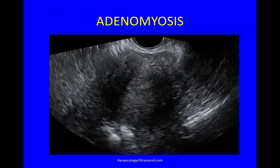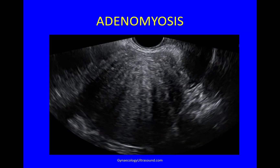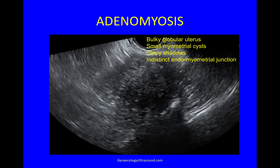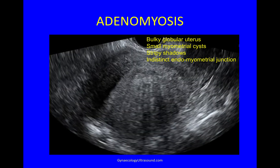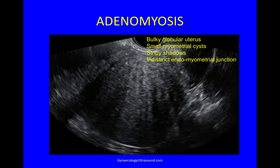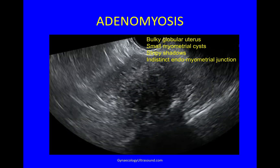This case has severe diffuse adenomyosis, where the uterus is bulky and globular, with small myometrial cysts, stripy shadowing and an indistinct endomyometrial junction.